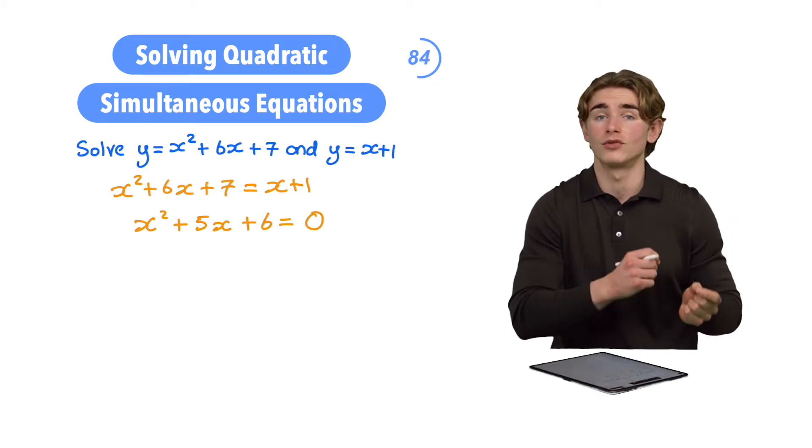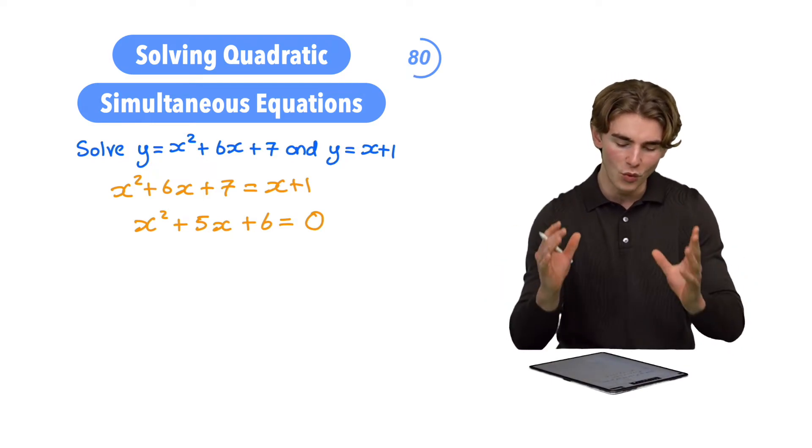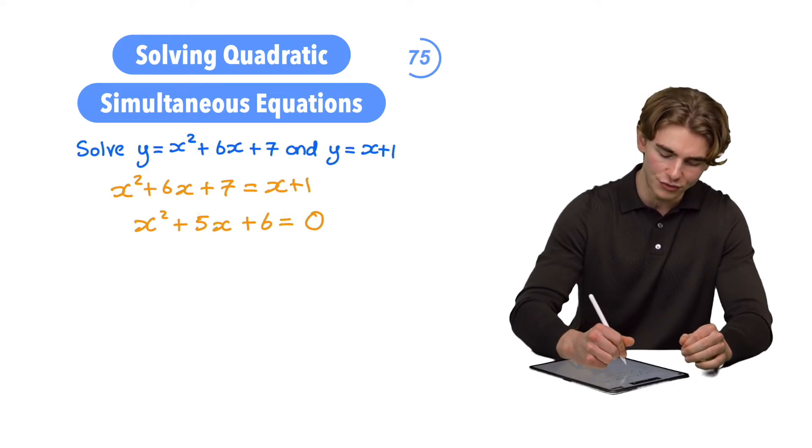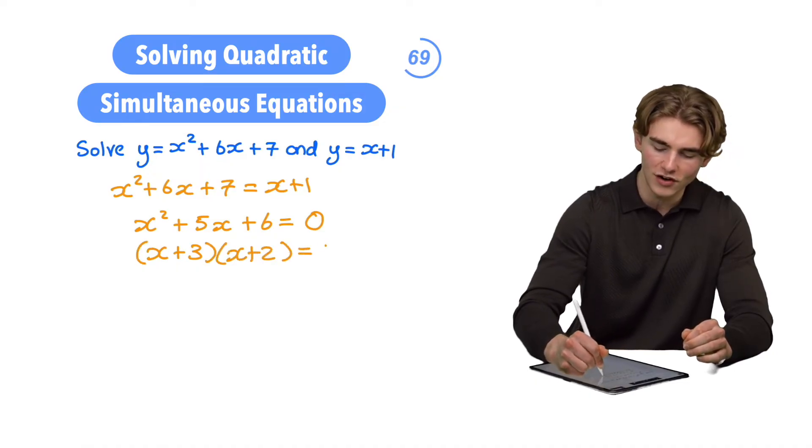Now, how are we going to solve this quadratic? We could either factorize it, use the formula, or complete the square. We're going to factorize it. We need two numbers which multiply to give 6 and add to give 5. They're going to be 3 and 2, so we can write this as (x + 3)(x + 2) = 0.